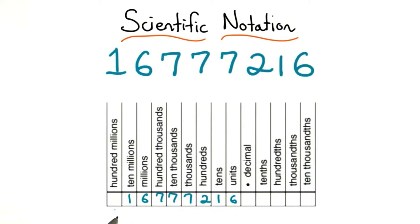Here is our number in a place value chart. I know that the 1 is really important. It's in the 10 million spot. So, this tells us how big the number is.